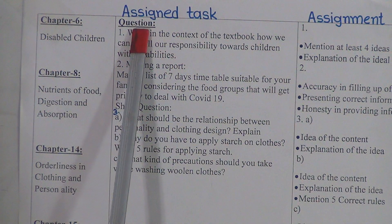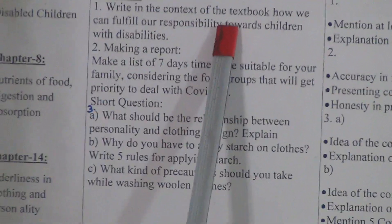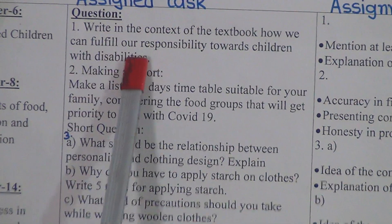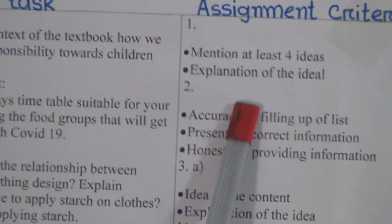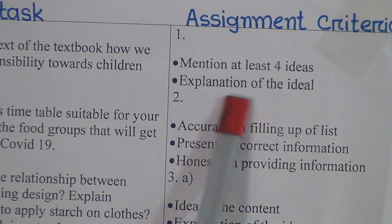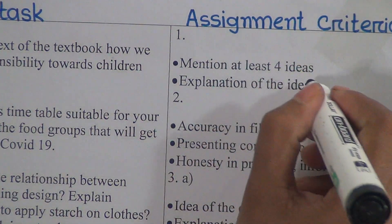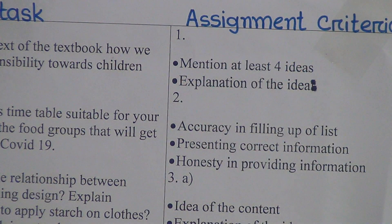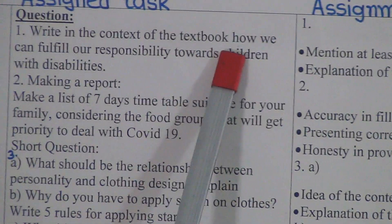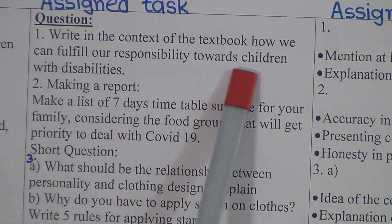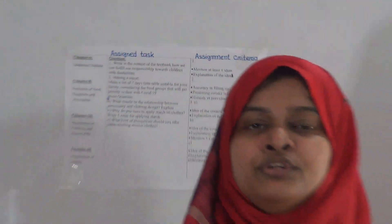The first question is: write in the context of the textbook how we can fulfill our responsibility towards children with disabilities. The assignment criteria requires at least four ideas with explanation of each idea.